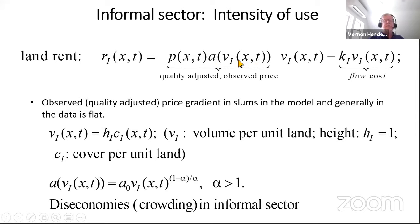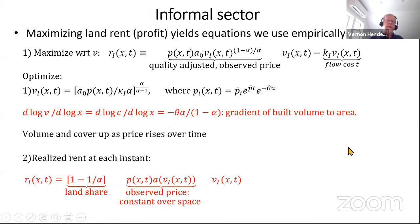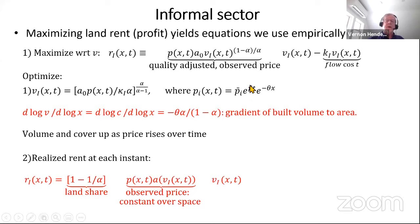You're going to have an observed price, which is a base price per unit of space depreciated by a crowding function. As crowding goes up, quality indicator A goes down. We have diseconomies due to crowding in the informal sector, and the alpha parameter plays a critical role. The first-order condition from optimization gives you volume at any point in time, which changes according to prices.